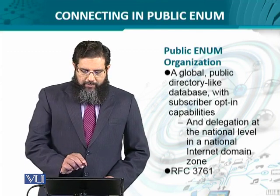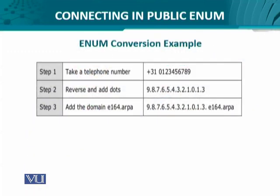Let's take a simple example. We take a telephone number from a European country — the international number starts with plus, followed by country code 31, and then the telephone number. To convert it into an ENUM-compliant, database-acceptable format, you need to reverse it and add dots. Reading it in reverse order: 9 dot 8 dot 7 dot, and continuing with dots between each digit.